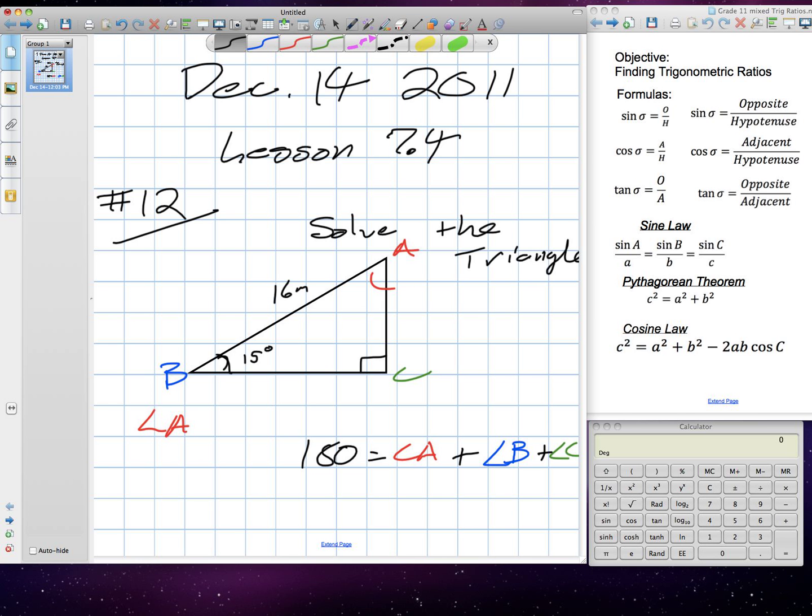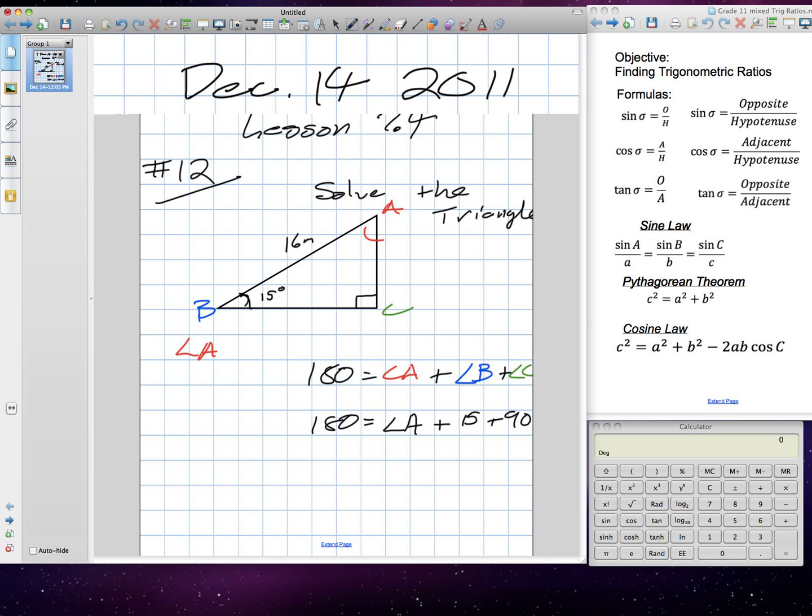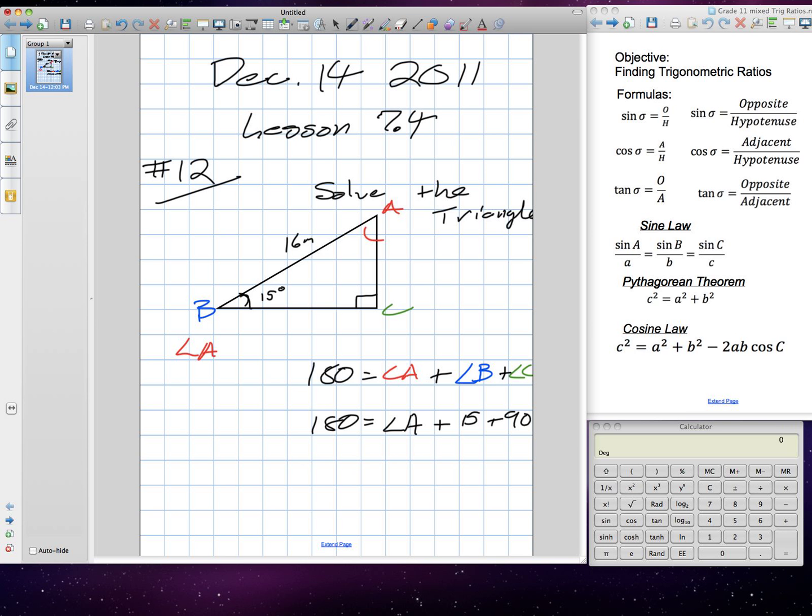So, we know the measurement of angle B is 15 degrees. Measurement of angle C is 90. We're still looking for angle A, and it is equal to 180 degrees. So, I'm going to bring 15 and 90 to the other side, so we'll get 180 subtract 15 subtract 90 equals angle A. Angle A is equal to 75.